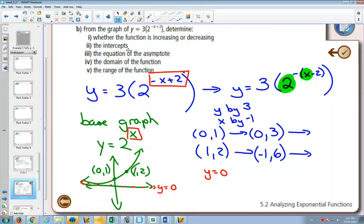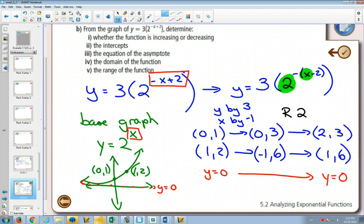Then the next number is the minus 2, meaning that it's going to get shifted 2 to the right. This one isn't moved up or down. So move both those points to the right. And finally, think about your asymptote. The only way your asymptote's going to get affected is if your graph gets moved up or down. This graph didn't get moved up or down. So your asymptote is still at y equals 0.